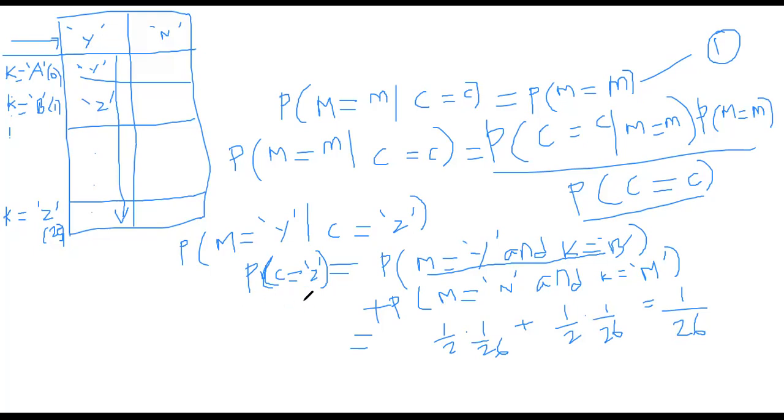So we found out the probability for the denominator. If you pay close attention, this denominator that we computed, although it's instantiated for ciphertext C being Z, you can change it for other ciphertext as well. There's nothing specific about Z. So you will always get 1 over 26 for this component. This component is going to be 1 over 26. What about the component over here? How do we compute this? So here we can do a small trick.